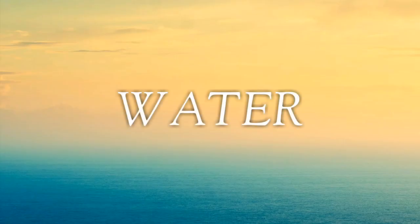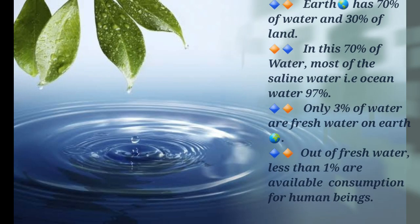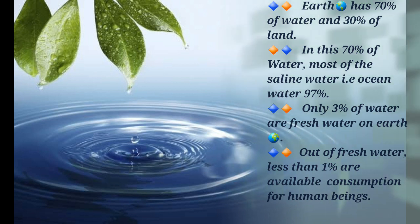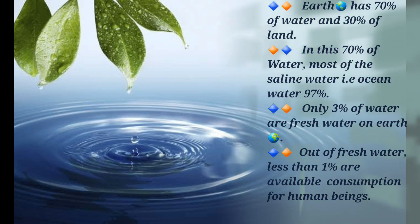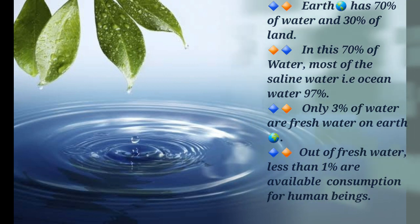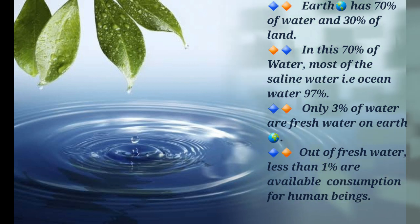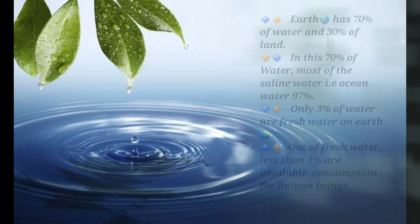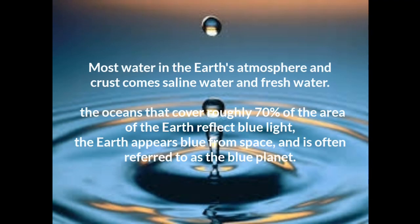The next very important component is water. The Earth has 70% water and 30% land. Of this 70% water, most is saline — ocean water makes up 97% — and only 3% is fresh water on Earth. Out of fresh water, less than 1% is available for consumption by human beings. The ocean covers roughly 70% of Earth's surface and reflects blue light, which is why Earth appears blue from space and is often referred to as the blue planet.